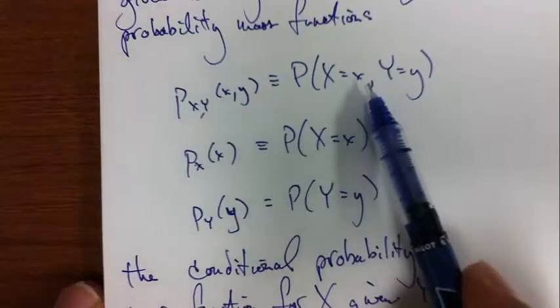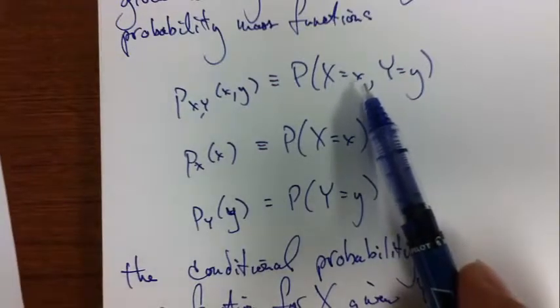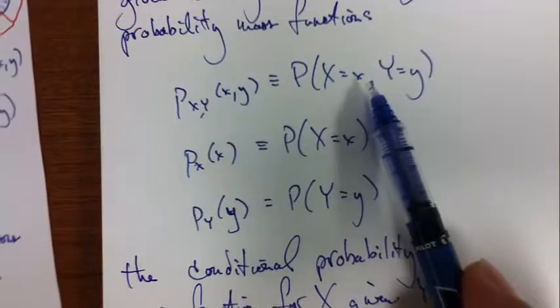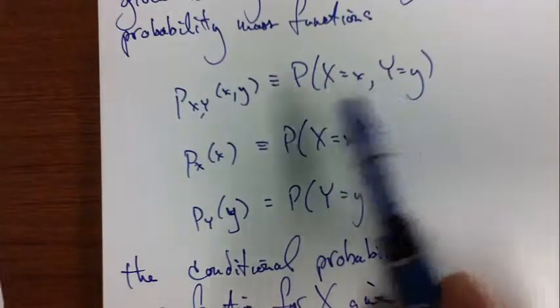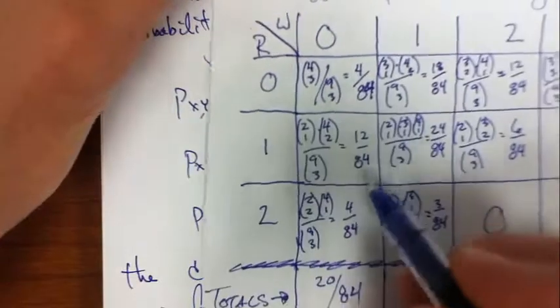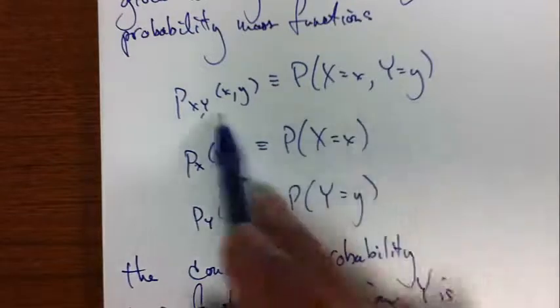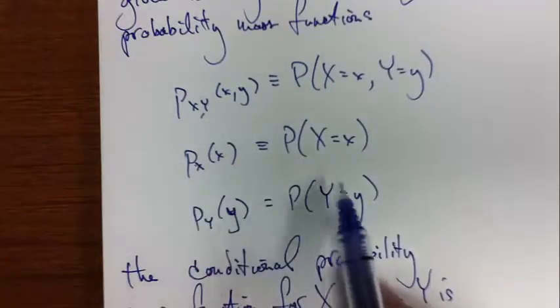For example, with our favorite little example about balls, if red equals, if r equals 1, and y equals 0, 1, 0, 1, 0, 1, 0, this function would evaluate to 12 over 84. So it's given this joint probability mass function and the marginals.